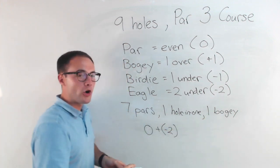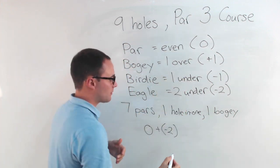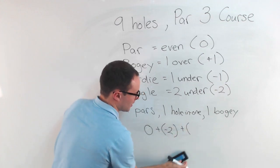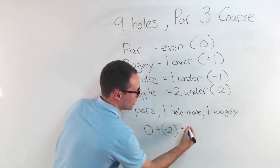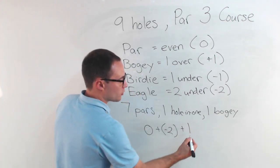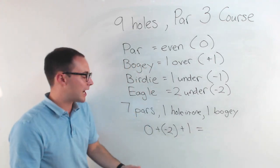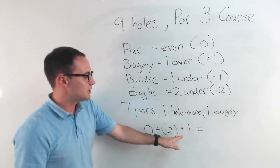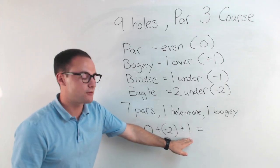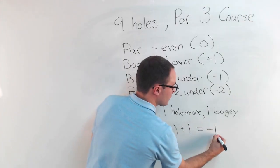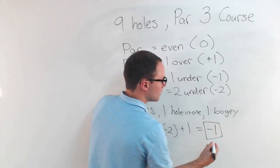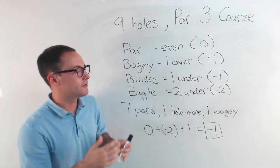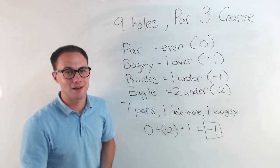Then I had one bogey, which is one over, so I'm also going to add plus one. My overall score for those nine holes: zero plus negative two is negative two, plus one gives me negative one. That means I was one under par for nine holes, which is not too bad.